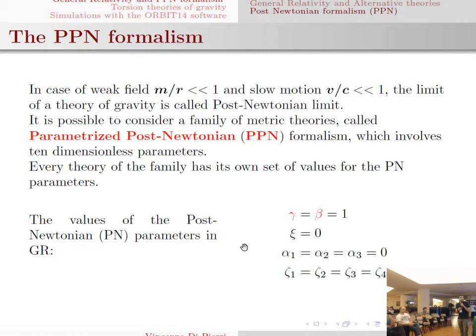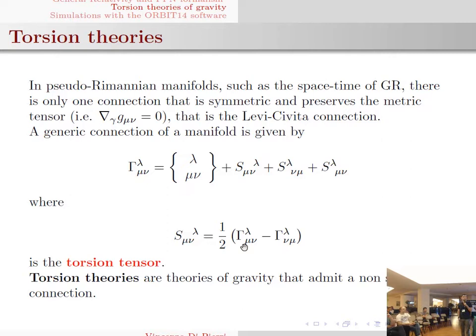Let me now introduce the torsion theories. In a manifold, the general expression of the connection is given by this formula, where the first part is the symmetric part — the Levi-Civita connection — and the second part is given by a combination of the torsion tensor. In general relativity and the post-Newtonian formalism, the torsion tensor is zero everywhere, so the connection is symmetric. Whereas, when we consider torsion theories, we assume that the torsion tensor could be non-zero somewhere.